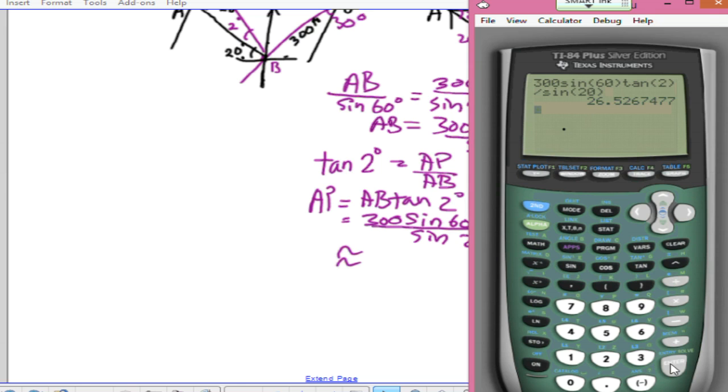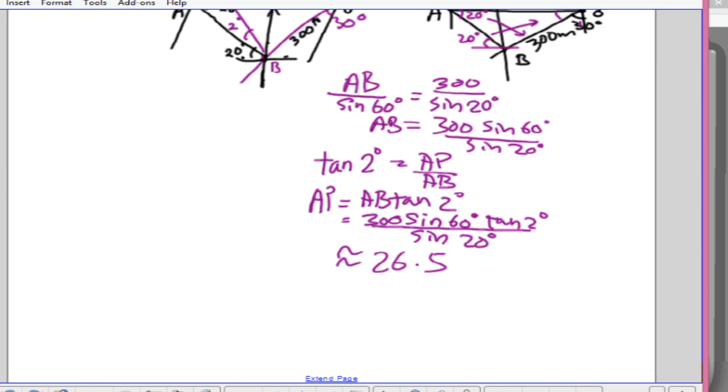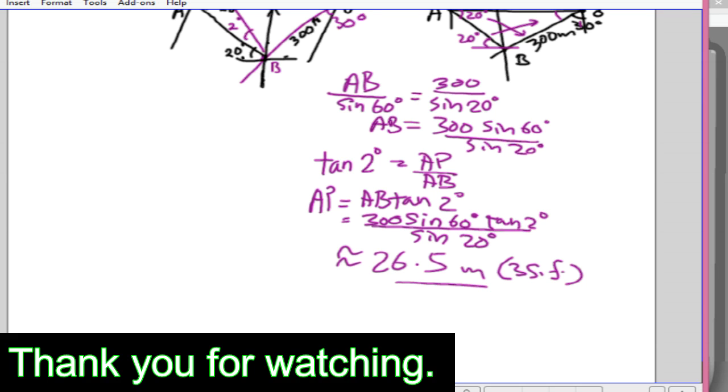So it's 26.5. So my answer is 26.5 meters to 3 significant figures. And here's the answer, thank you.